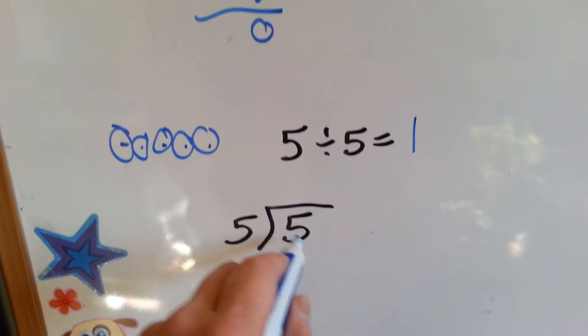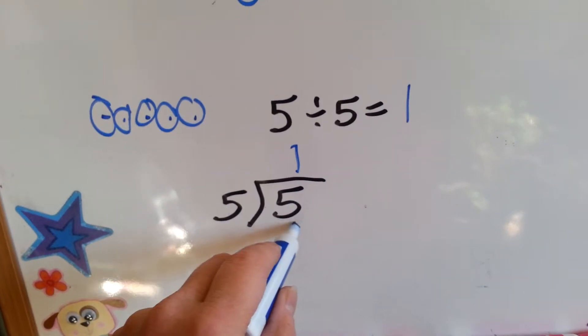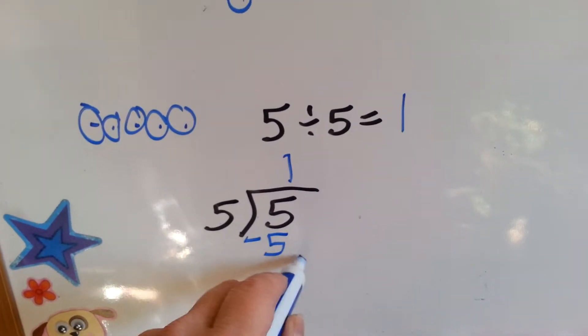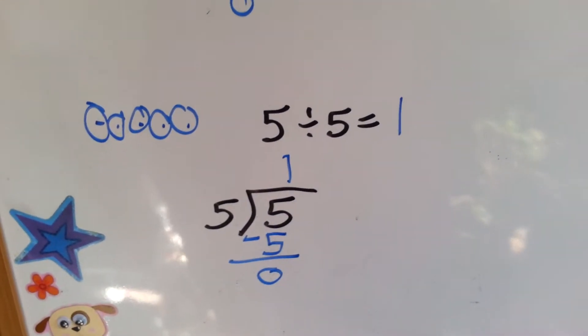So, 5 divided by 5 is 1. You do your multiplication. 5 times 5 is 1. You do your subtraction. And you've got 0.